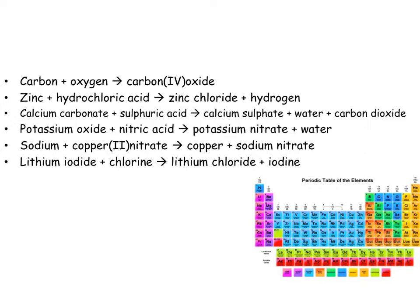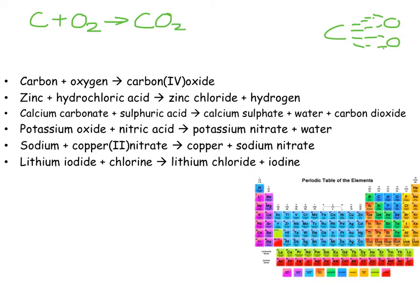If we've got carbon on its own, oxygen is diatomic so it's O₂. Remember you worry about the formulas before worrying about the balances. Carbon 4 oxide is carbon with a valency of 4, oxygen with a valency of 2, and we find that it's CO₂. So carbon 4 oxide is carbon dioxide.